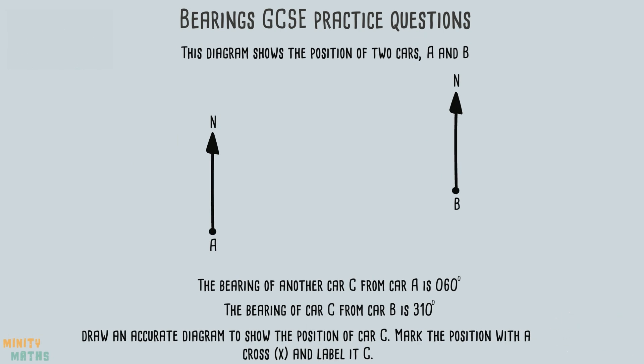Let's look at this first exam style question about bearings. This question requires you to accurately draw the position of a third car on the diagram. This means you will need to use a protractor.